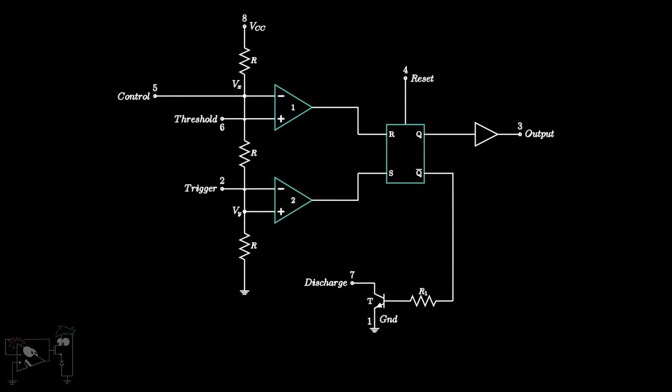Using voltage division, we get Vx as R plus R upon R plus R plus R into VCC, which is 2 by 3 VCC.